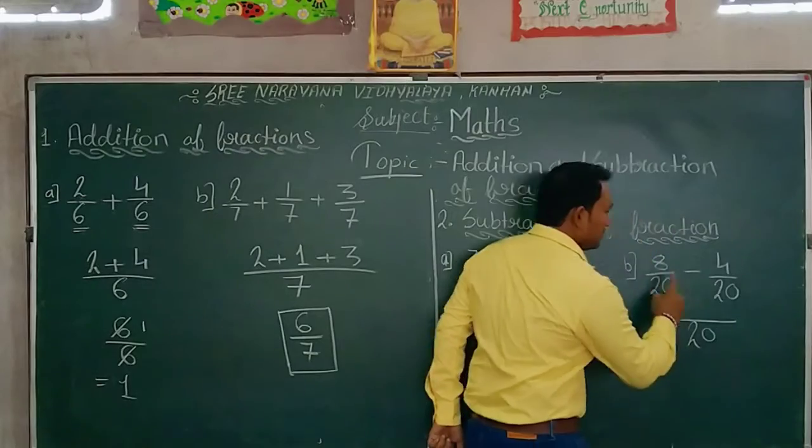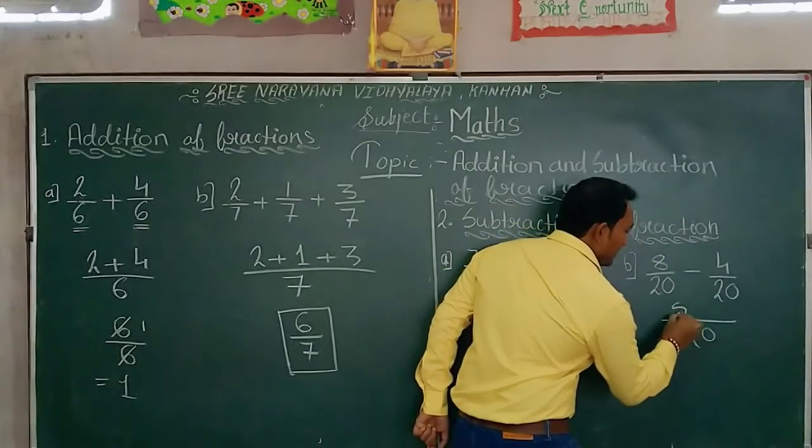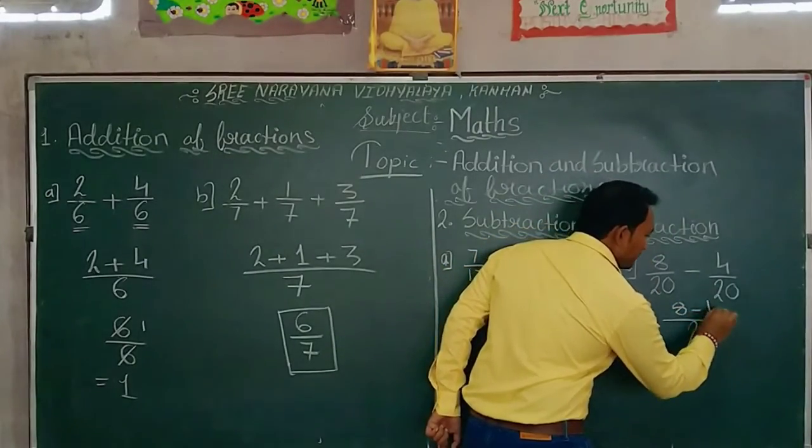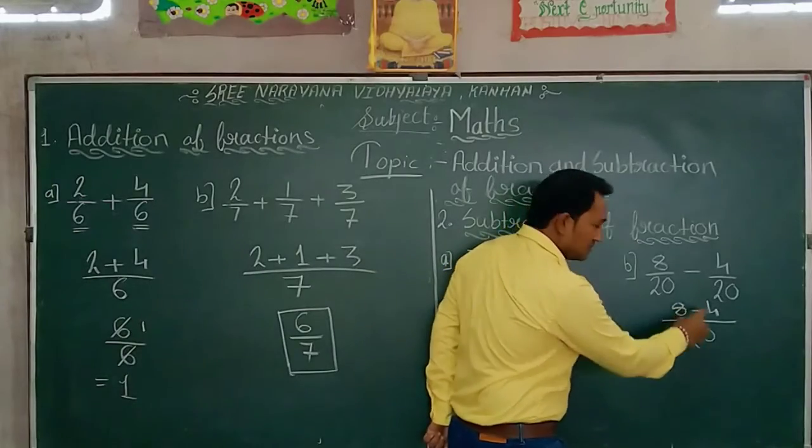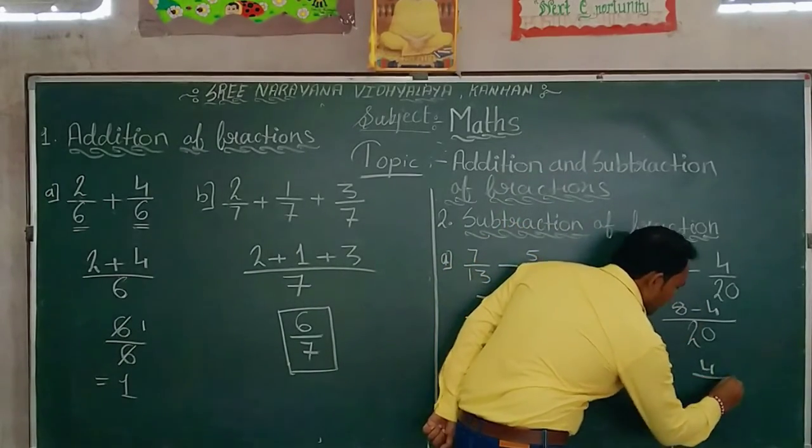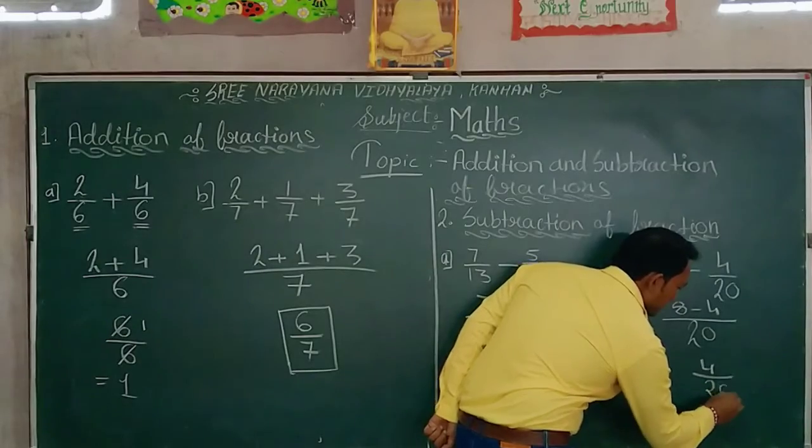And we will subtract numerators. That is 8 minus 4. So 8 minus 4 is 4. And 20 will return as it is like this.